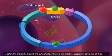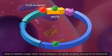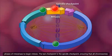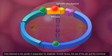The G2M checkpoint allows cells that have successfully completed all three phases of interphase to begin mitosis. The last checkpoint is the spindle checkpoint, ensuring that all chromosomes have attached to the spindle in preparation for anaphase.